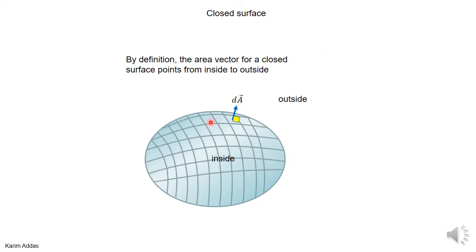If you take a closed surface and cut it into small elements of area, by definition the area vector for a closed surface must point from inside to outside. I could have drawn the area vector pointing inward, but no — for a closed surface it must be defined from inside to outside. This convention is necessary for Gauss's law, which deals with closed surfaces. If you don't follow this sign convention, you might get an incorrect minus sign in the problem.